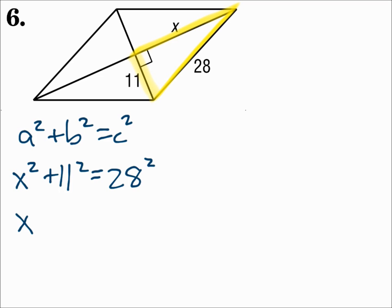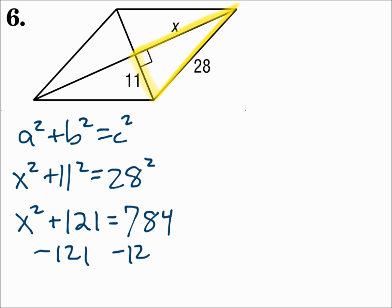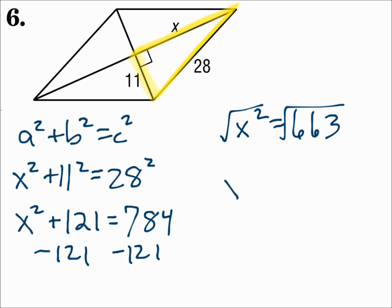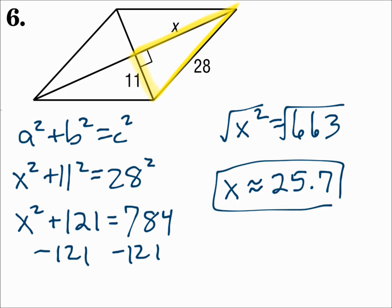Solve for x. 11 squared is 121, and 28 squared is 784. Subtract 121 from each side, and x squared is 663. Finally, square root each side, and x is approximately 25.7.